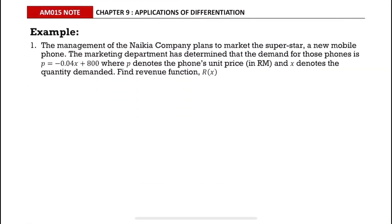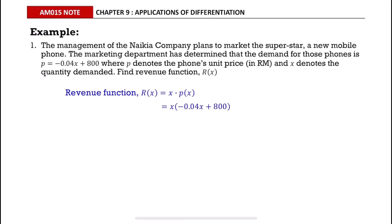For Example 1, the management of the Nikea company plans to market the Superstar, a new mobile phone. The marketing department has determined that the demand for the phone is p = -0.04x + 800, where p denotes the unit price in RM and x denotes the quantity demanded. Find the revenue function. The revenue function equals x multiplied by p(x), so substitute p(x) and expand.